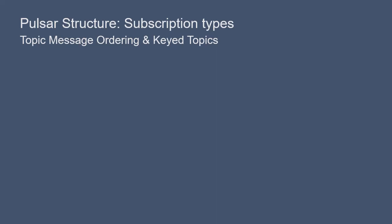The four subscription models are Exclusive, Failover, Shared, and Key Shared. In Exclusive mode, only a single consumer is allowed to subscribe to the partitioned topic. In this case, ordering is guaranteed. However, it's not very scalable.